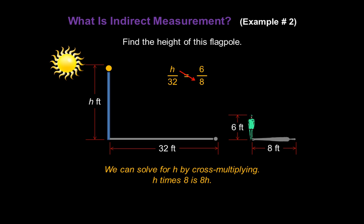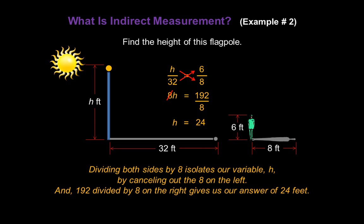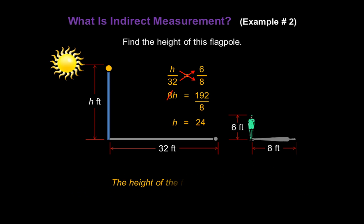We can solve for h now by cross-multiplying. h times 8 is 8h, and 32 times 6 is 192. Now dividing both sides by 8 isolates our variable h on the left-hand side, and 192 divided by 8 on the right gives us our answer of 24 feet. So the height of the flagpole is 24 feet.